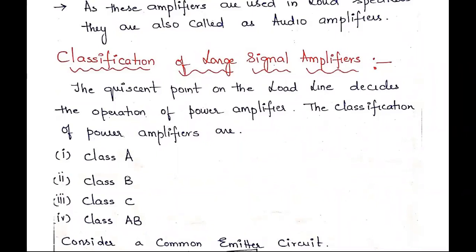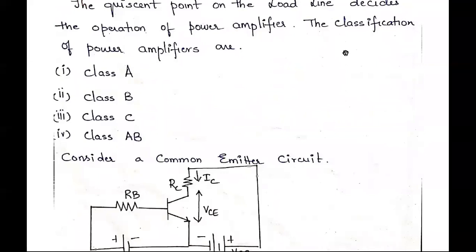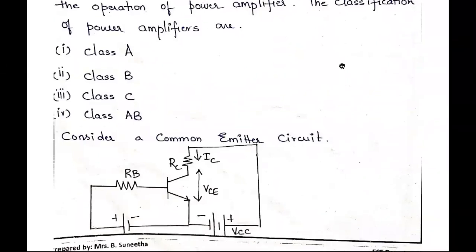Now we go to the classification of large signal amplifiers. The operating point on the load line decides the class of the power amplifier. If we operate at the center of the active region, it is Class A. If we operate at cutoff, it is Class B. Below cutoff is Class C, and slightly above cutoff is Class AB.